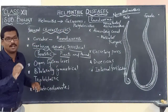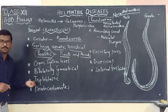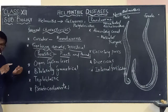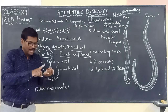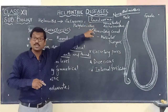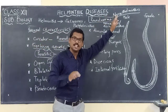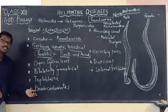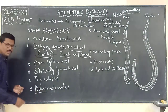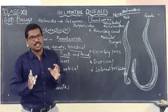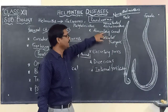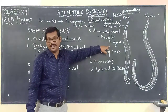Another characteristic of roundworms is that they are triploblastic, which means they possess three germ layers: ectoderm, mesoderm, and endoderm. They are also pseudocoelomates — 'pseudo' means false, so they have a false body cavity.